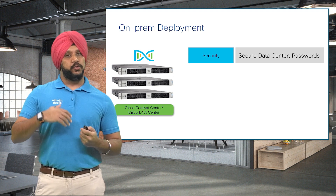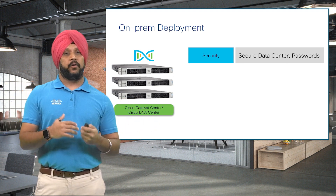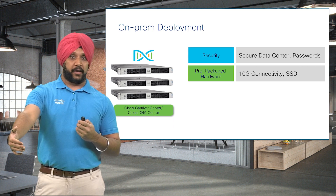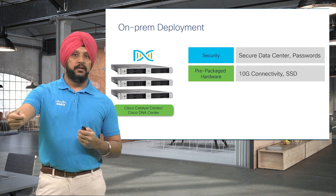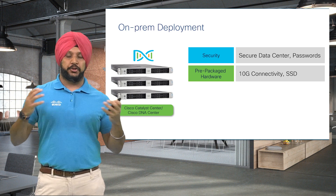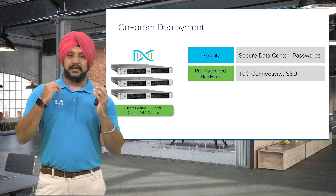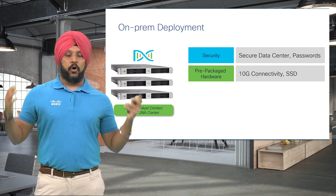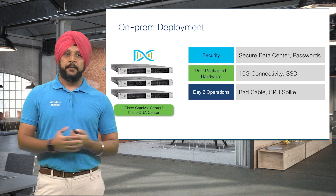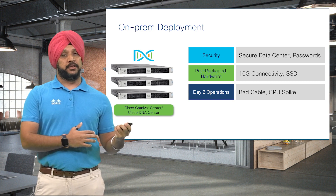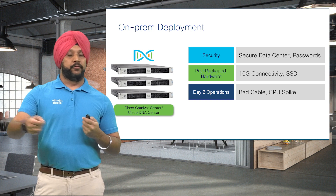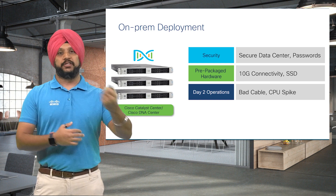They also had to care about the throughput or bandwidth that a physical appliance is going to get, attaching the right cable — a 10-gig cable. At Cisco, we shipped the boxes with the right SSD drives so that the experience of Cisco DNA Center or Catalyst Center is seamless. In day-two operations, a network admin had to care about cable faults or CPU spikes and how to troubleshoot those.